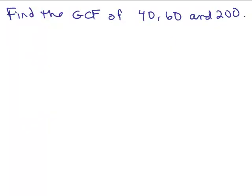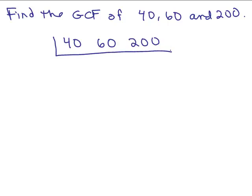Let's do another problem. Find the greatest common factor of 40, 60, and 200. Feel free to try this on your own first. Some of you probably could get it in your head, but here is a method if you can't. We put all three numbers together and think, what number goes into all of them? I hope everybody sees that 10 goes into all three of those numbers. So I'm going to divide by 10. 40 divided by 10 is 4, 60 divided by 10 is 6, and 200 divided by 10 is 20.